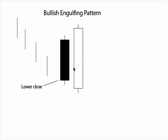These two candlesticks make up the engulfing pattern. The trigger candlestick in the engulfing pattern engulfs the entire real body of the previous candlestick, but it starts out again with this lower close from the preceding trend that was taking place before the pattern started.